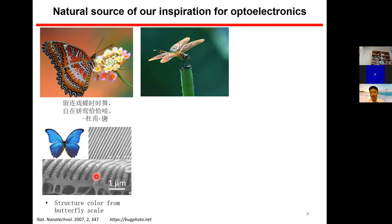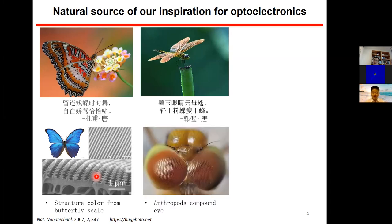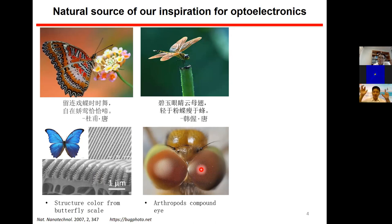Dragonfly is another example — a very agile animal. If you zoom in under an optical microscope, you can see the dragonfly has two very big compound eyes with many small bumps or domes. With this pair of compound eyes, the dragonfly has a very large field of view, almost 360 degrees — it can see front and back, making it very difficult to capture.